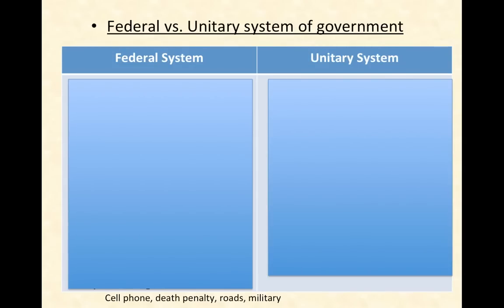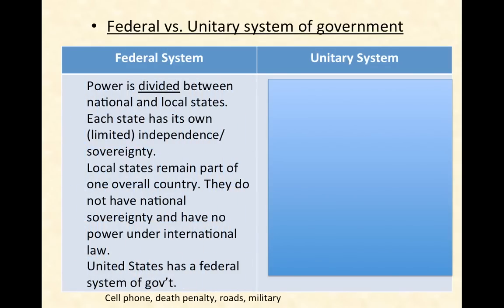Let's talk about federal versus unitary systems of government. If we think back to our definition of government or political system, it's all about how control is maintained and how power is distributed. You can have a federal system of government or a unitary system. The United States has a federal system, which means that power is divided between the national government and the local states. The United States is made up of 50 different states that together make up the country of the United States of America.